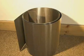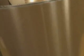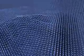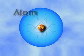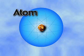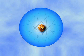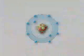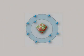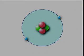Dalton concluded that pure substances called elements are made of extremely small particles called atoms. He stated that atoms of the same element are exactly alike, and the atoms of different elements are different from one another.